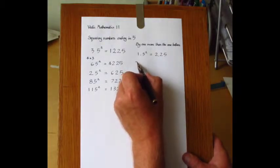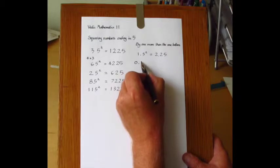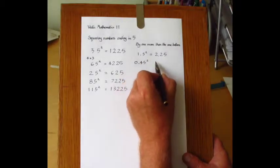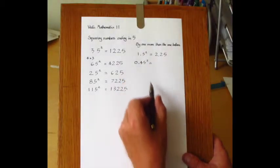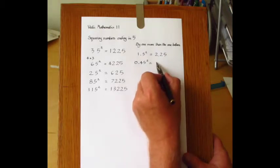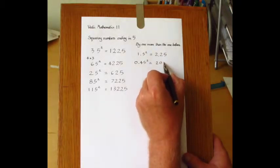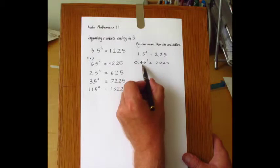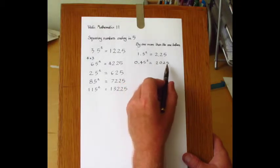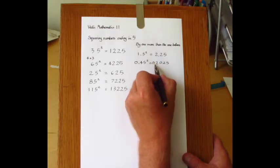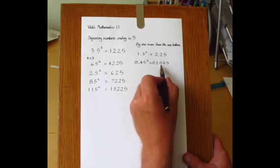Similarly, 0.45 squared. We treat it as 45 and square that, giving 2025. And because there are 2 decimal digits here, there will be 4 in the answer. So it's 0.2025.